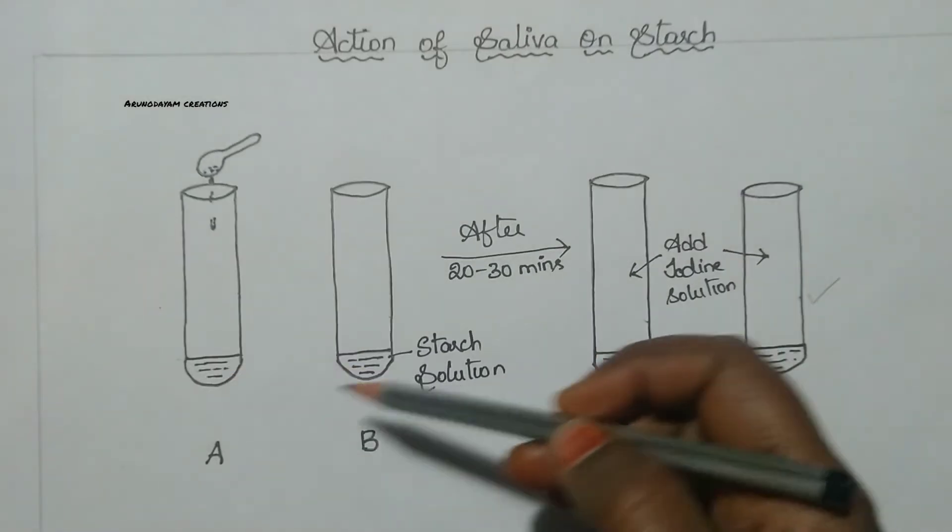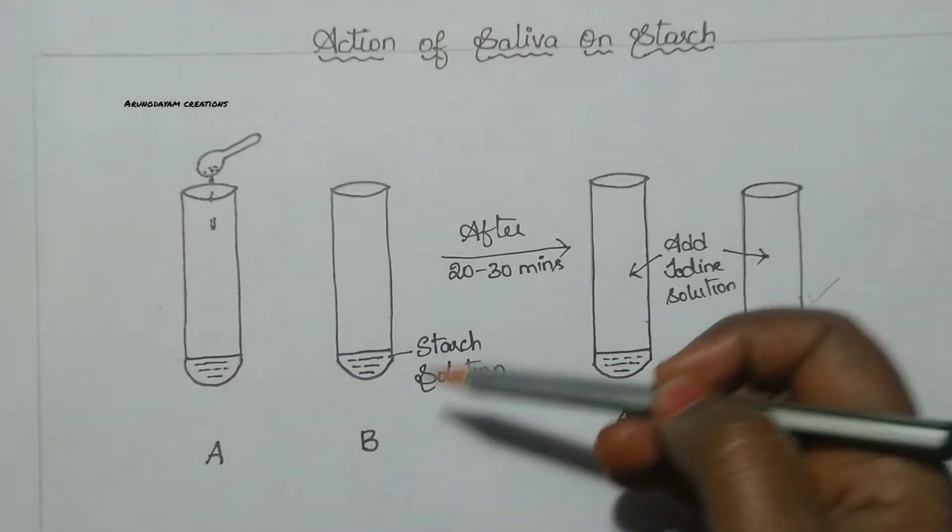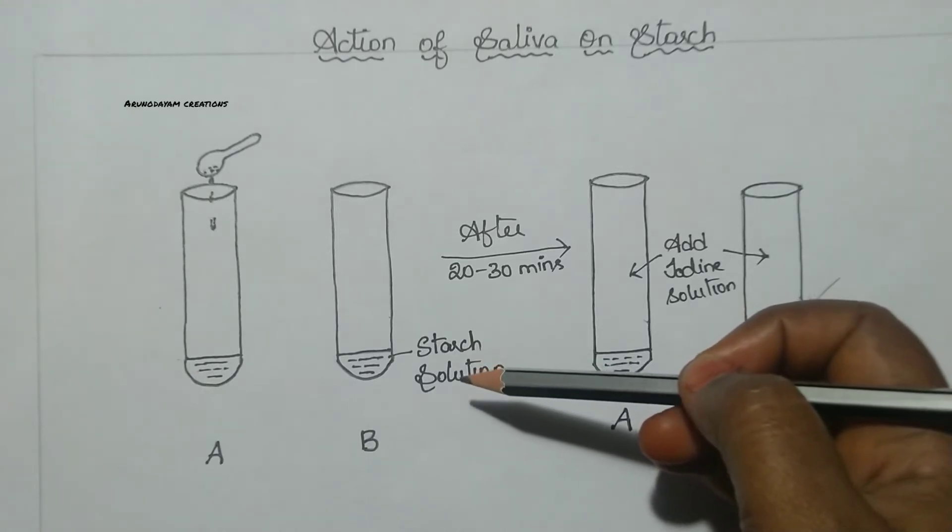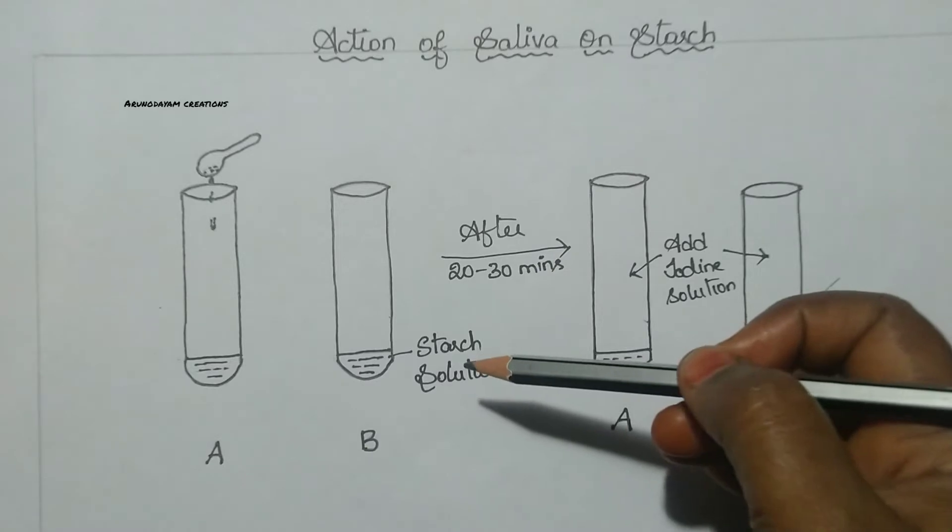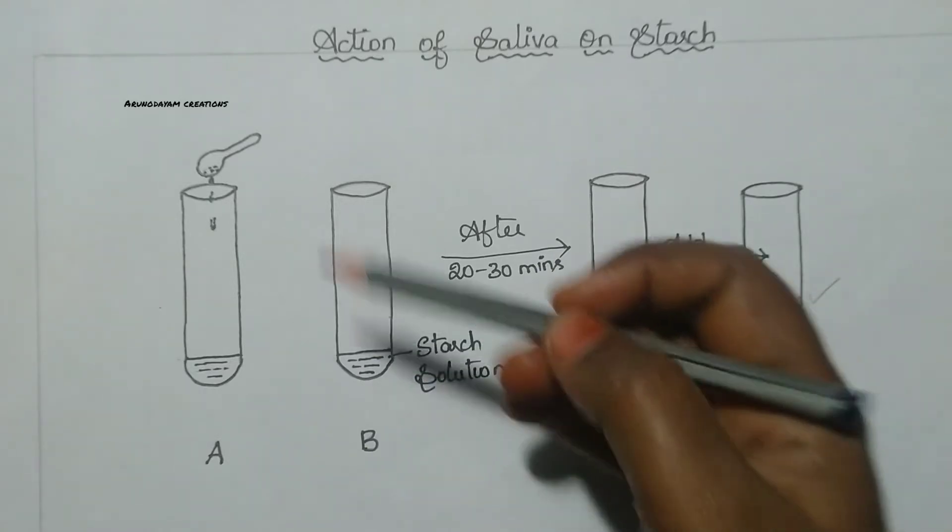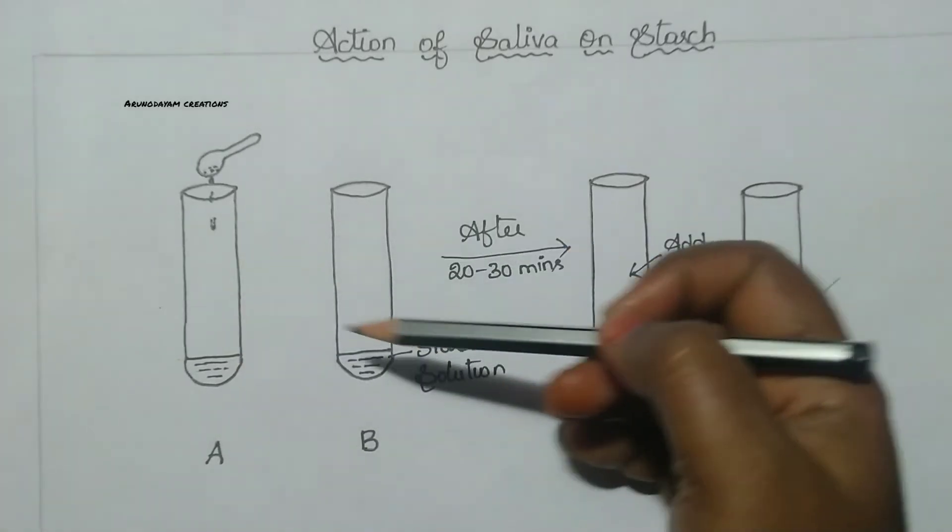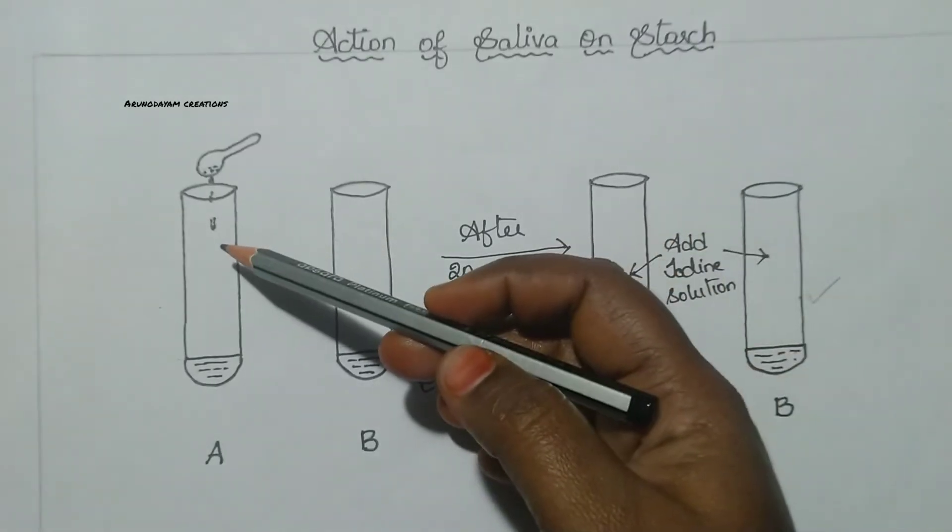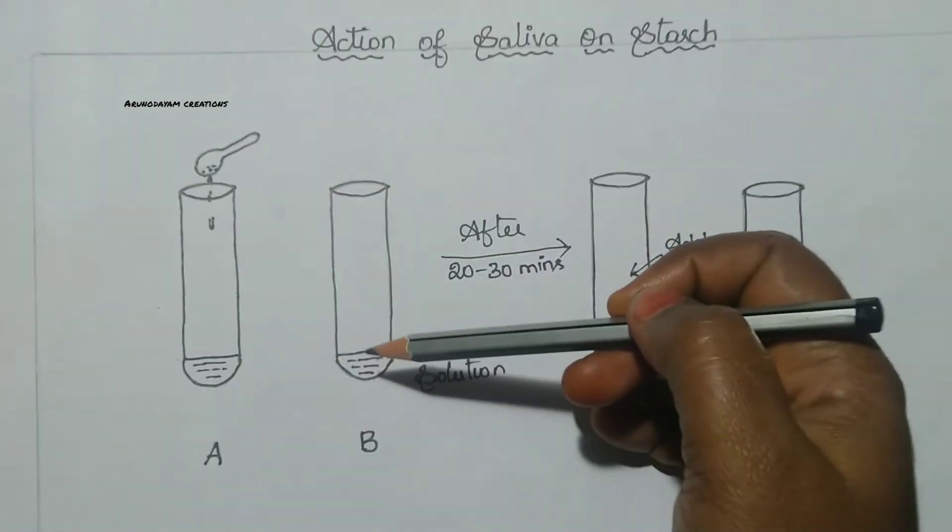First, take two test tubes A and B. Then after we have to take some starch solution. We can prepare starch solution by taking 100 ml of water and mixing 1 gram of starch to it. Then after, take 1 ml of starch solution into each of these test tubes.